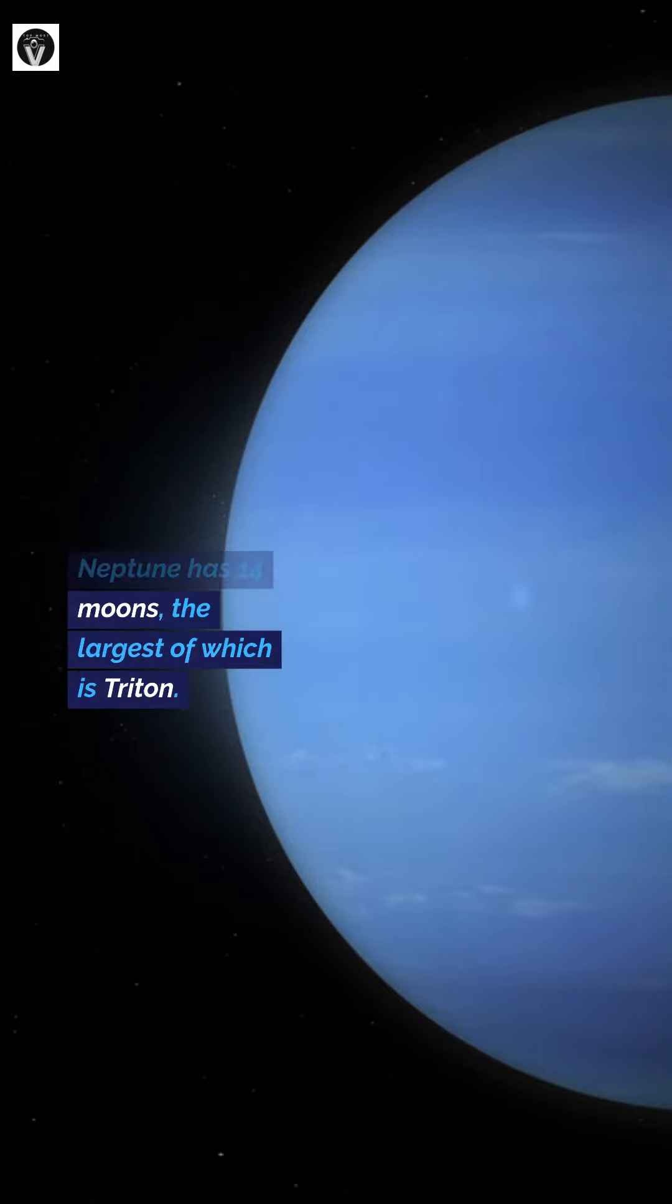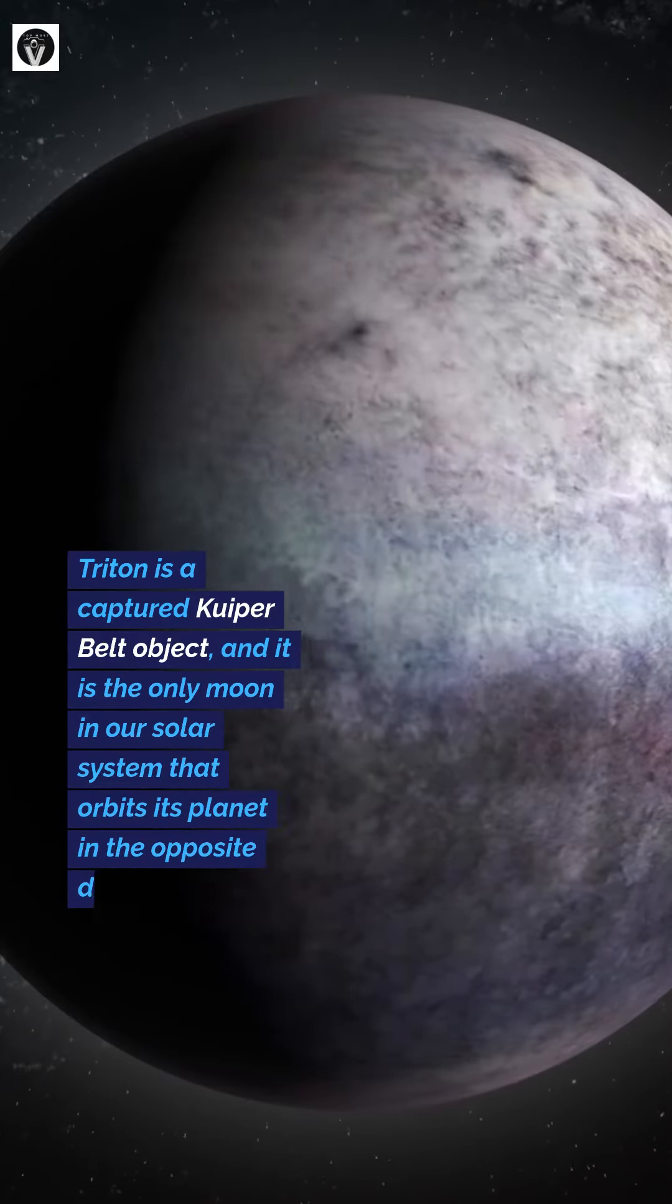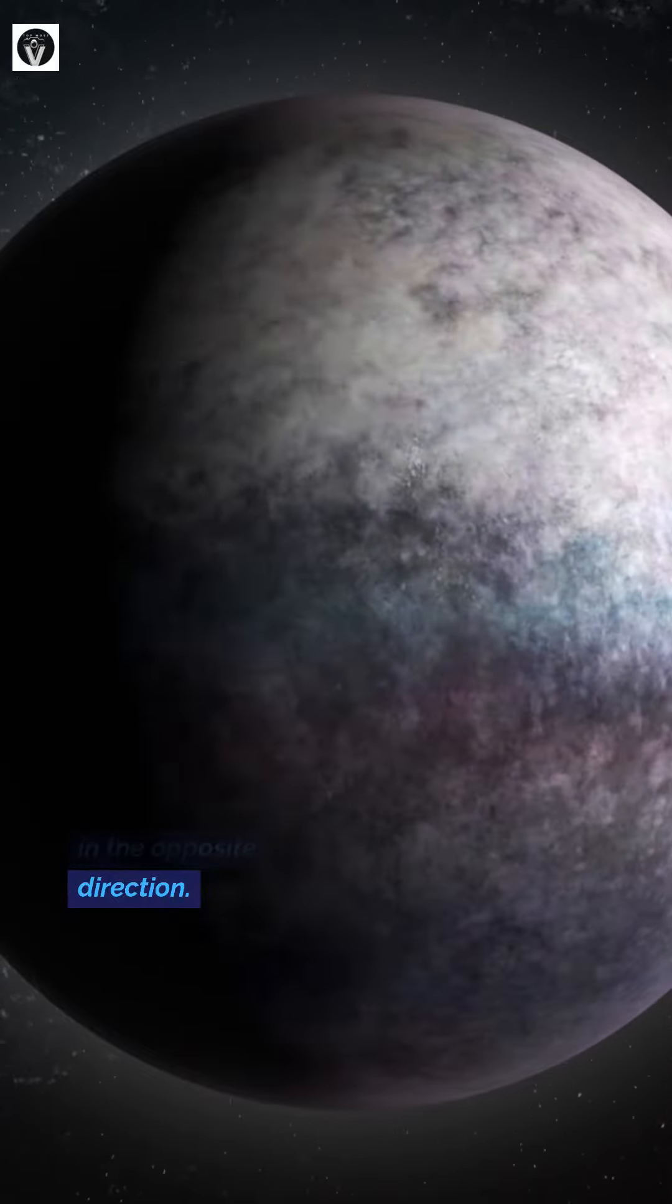Neptune has 14 moons, the largest of which is Triton. Triton is a captured Kuiper Belt object and is the only moon in our solar system that orbits its planet in the opposite direction.